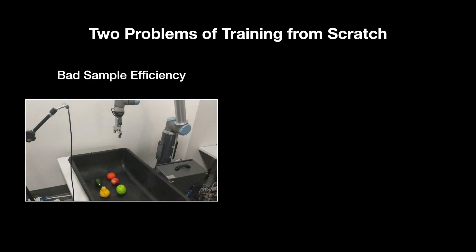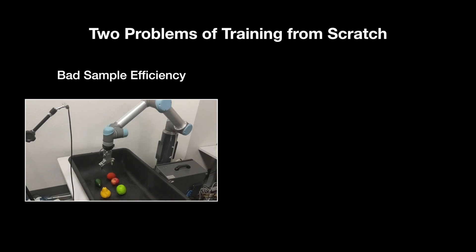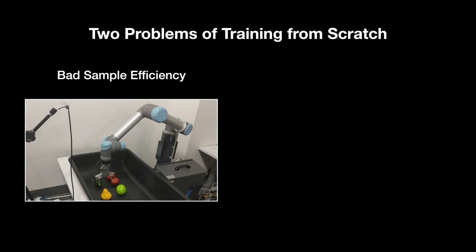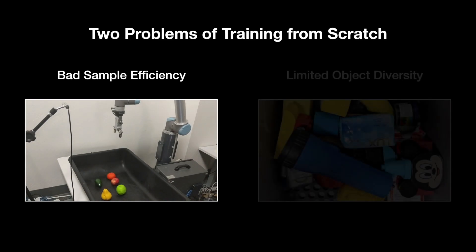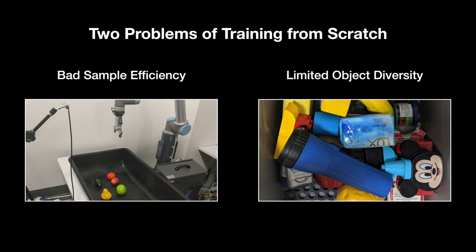Two problems arise when training an affordance model from scratch. First, the robot performs random exploration in the early phase of training, which leads to bad sample efficiency. Second, it has only interacted with a limited set of objects during training, which constrains the model's generalization ability.